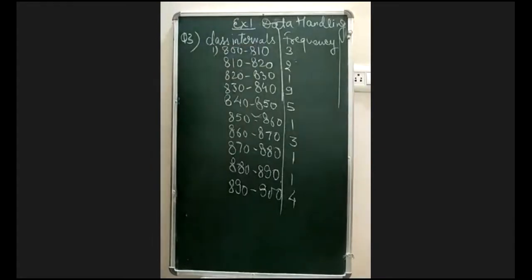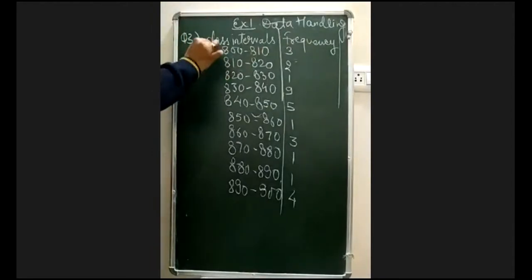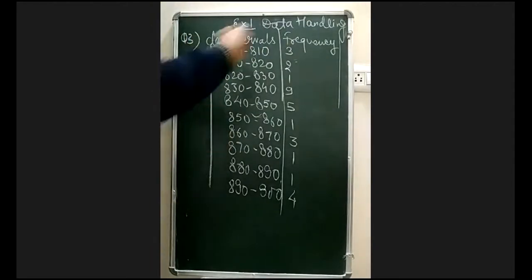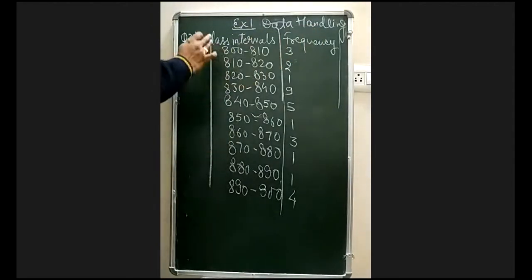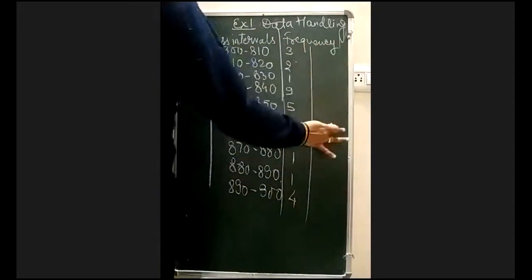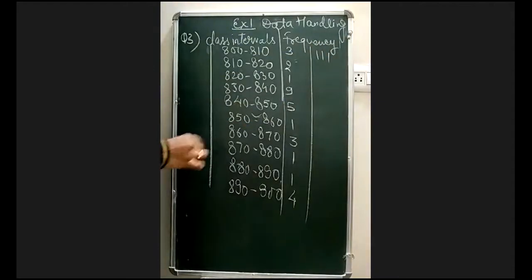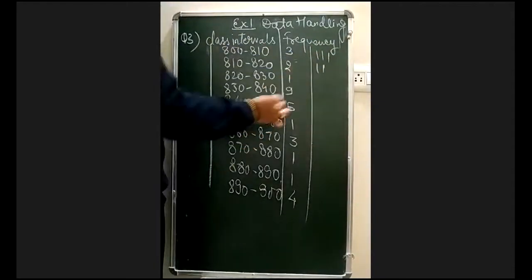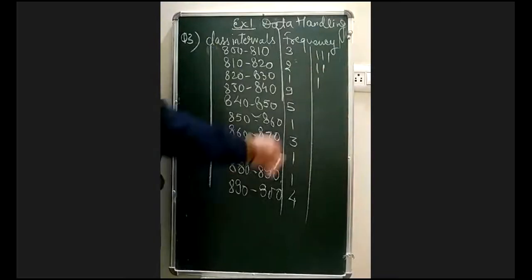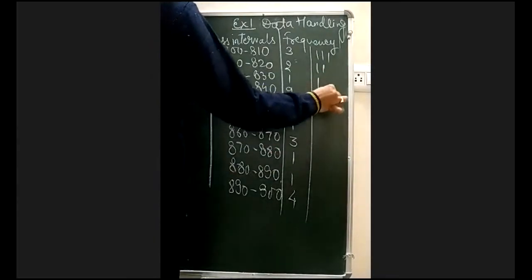For 810, values like 801, 803, 805 fall in 800–810, but 810 itself goes to the next interval. Now coming to the tally marks — I don't have space on that side so I am putting them here. The tally marks give us: 800–810 is 3, 810–820 is 2, 820–830 is 1.